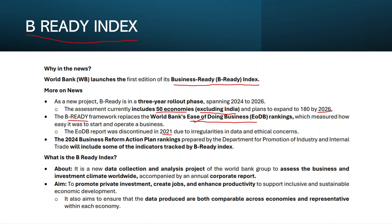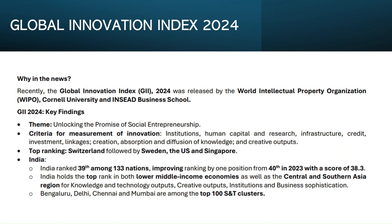The Ease of Doing Business index was discontinued in 2021 due to irregularities and ethical concerns with its rankings. From 2024, the new B-Ready Index will be rolled out in a phased manner until 2026. India is not yet part of the B-Ready Index but will be included by 2026.